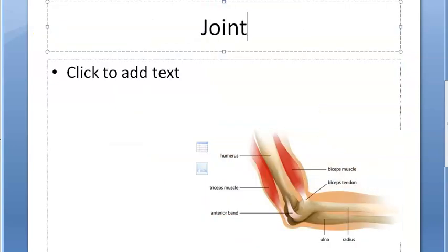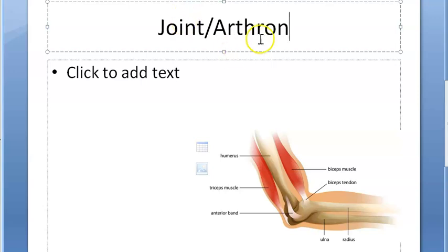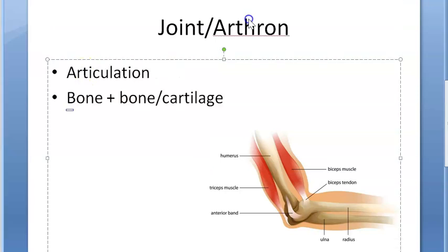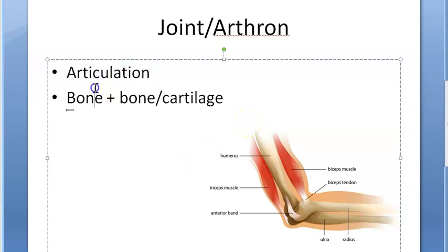Basically, a joint is also called arthron. That's why you will hear arthritis - rheumatoid arthritis - or if they are doing something like arthrodesis, they are fixing the joints, or arthrology. What is articulation? This relationship between whatever bones are involved, that is the articulation - bone and bone articulation, you can say.